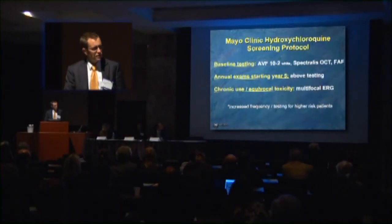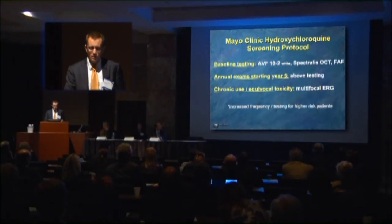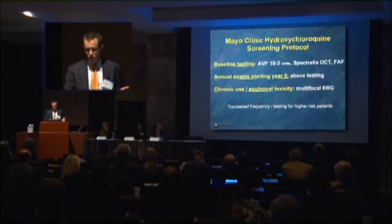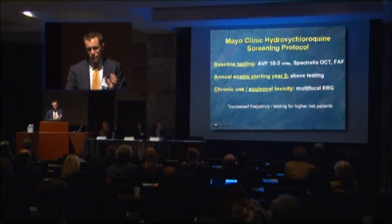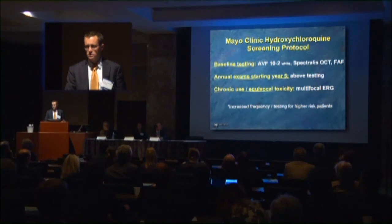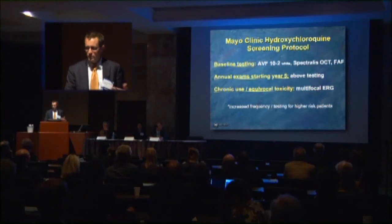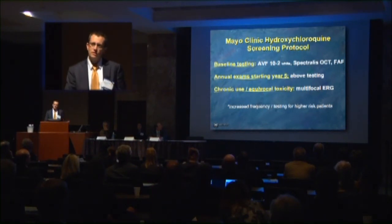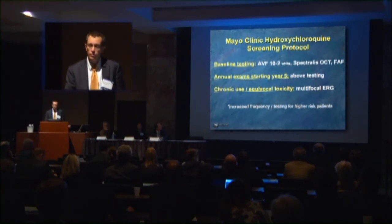Our protocol, established about a year ago: baseline testing includes white 10-2, Spectralis OCT with 20-degree radially oriented rasters, and fundus autofluorescence — both done at the same machine, so it's quick. At year five, repeat the same testing. For chronic use or equivocal results, add multifocal ERG. We have a low threshold to add mfERG if there are concerns, but not everyone would get it.